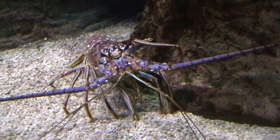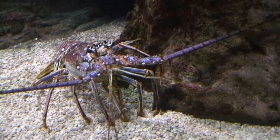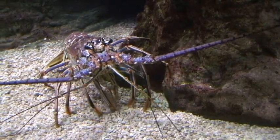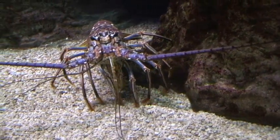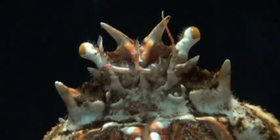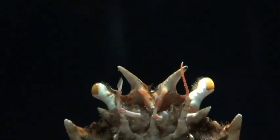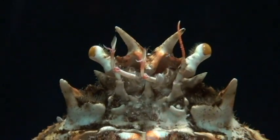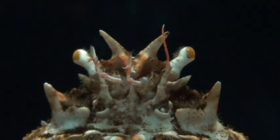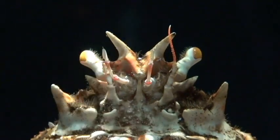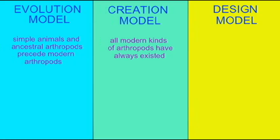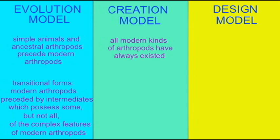Arthropods are complicated invertebrates. They have complex, segmented limbs, an exoskeleton, and an incredibly complex head—with complex eyes and the fusion of a large number of segments. If the intelligent design model is true, these complex features could not have evolved through gradual steps. There would be no advantage to an individual to have some features of the arthropod head, but not all.